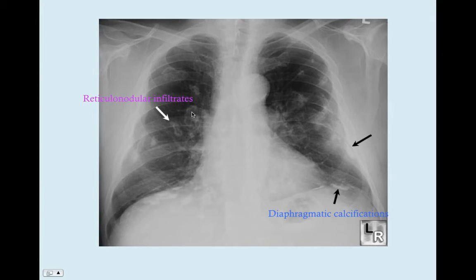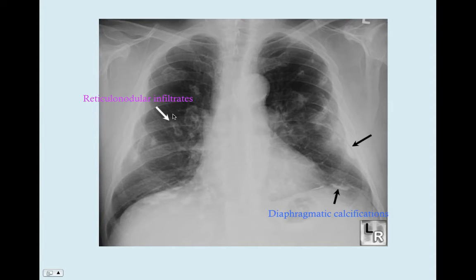We've got reticulonodular infiltrates, and basically all that is is the asbestos causing inflammation in the lung parenchyma. This is ultimately what leads to the symptoms of asbestos exposure — the hypoxia and the dyspnea — since we're going to get a decreased diffusion of oxygen. Like anything in asbestos exposure seen in the lungs, these reticulonodular infiltrates are mostly going to be towards the bottom, not so much at the top.